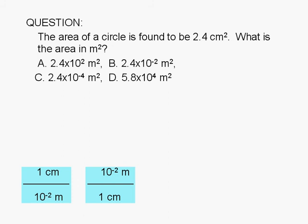First, we write the known amount 2.4 centimeters squared. Note that when you square something, you multiply it by itself. So, centimeters squared is centimeter times centimeter.